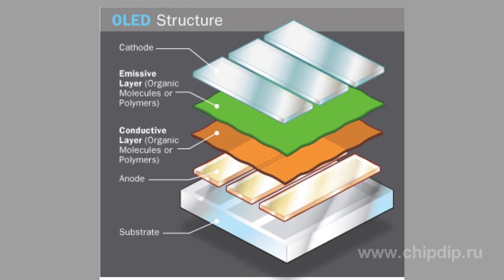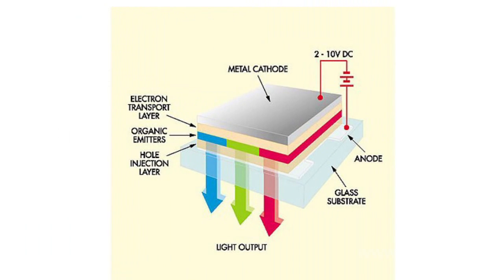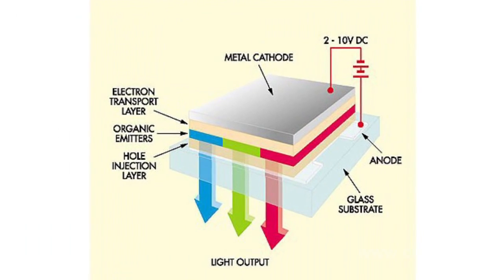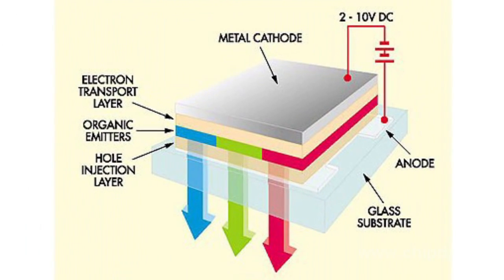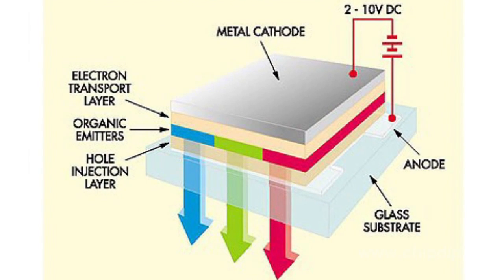The emissive layer is charged negatively, while holes appear in the conductive layer, which charges positively. Under the influence of static electricity, electrons and holes meet, and recombination occurs. A peculiar feature of organic matter is that the holes have greater mobility compared with electrons, so recombination occurs closer to the emissive layer. Electrons' energy decreases, which is accompanied by the emission of electromagnetic radiation in the form of visible light.